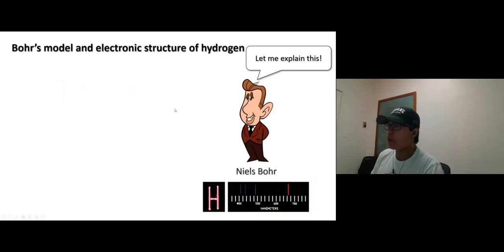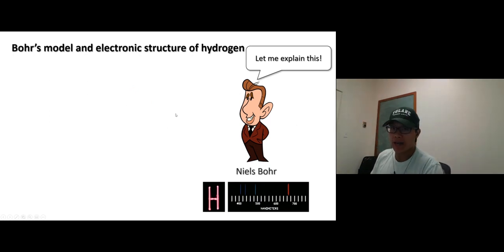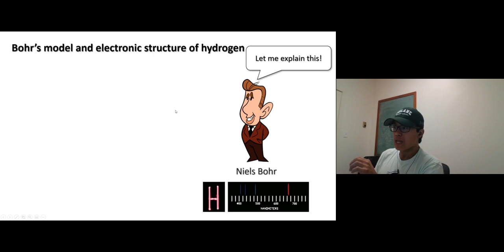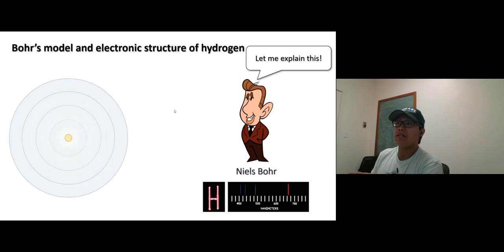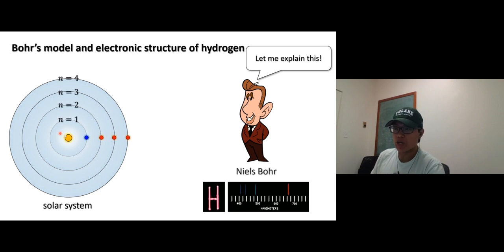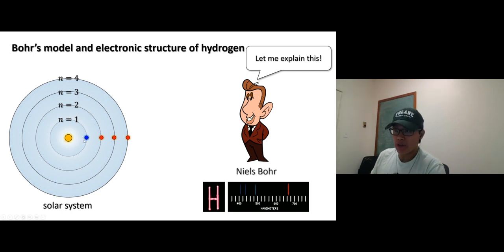I'm going to get help from Mr. Bohr to explain that. Anyone remember what his atomic model is called? The planetary model — it looks like a solar system: nucleus in the middle with protons and neutrons, and the electron is orbiting around the nucleus.